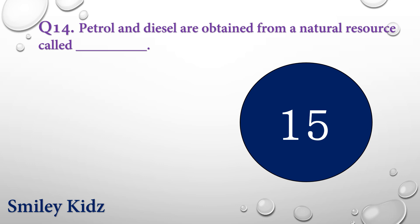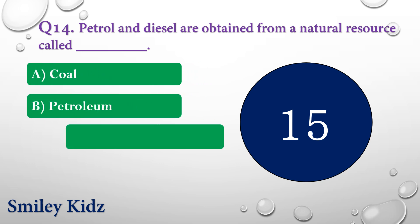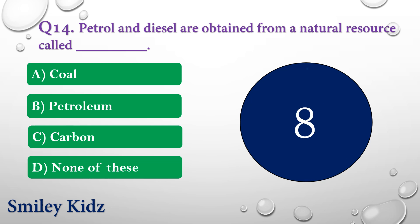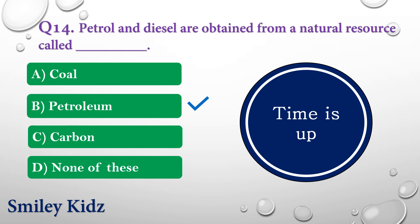Question number fourteen: Petrol and diesel are obtained from a natural resource called dash. The options are: A) Coal, B) Petroleum, C) Carbon, or D) None of these. Your time is up and the right answer is option B — Petroleum. Petrol and diesel are obtained from a natural resource called petroleum.